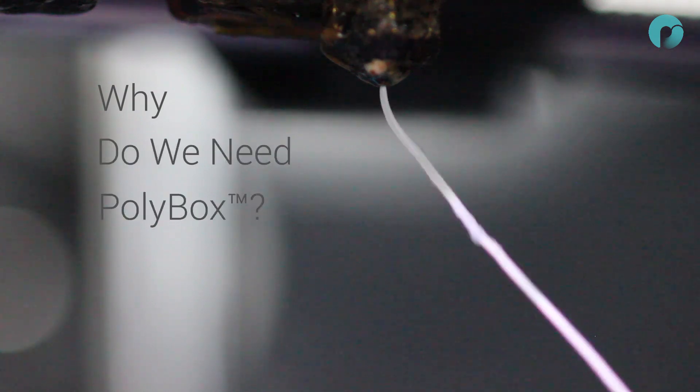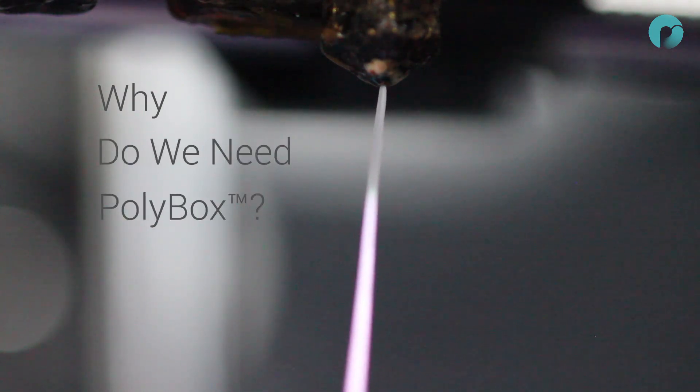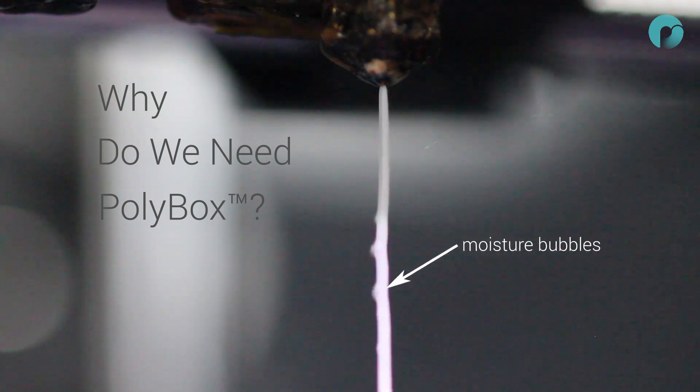All 3D printing materials absorb water molecules from the surrounding air. These water molecules form polar bonds within the polymer chains. When the filament then passes through the hot end, the moisture boils, expands and ruptures the filament, ruining the surface quality of your print.